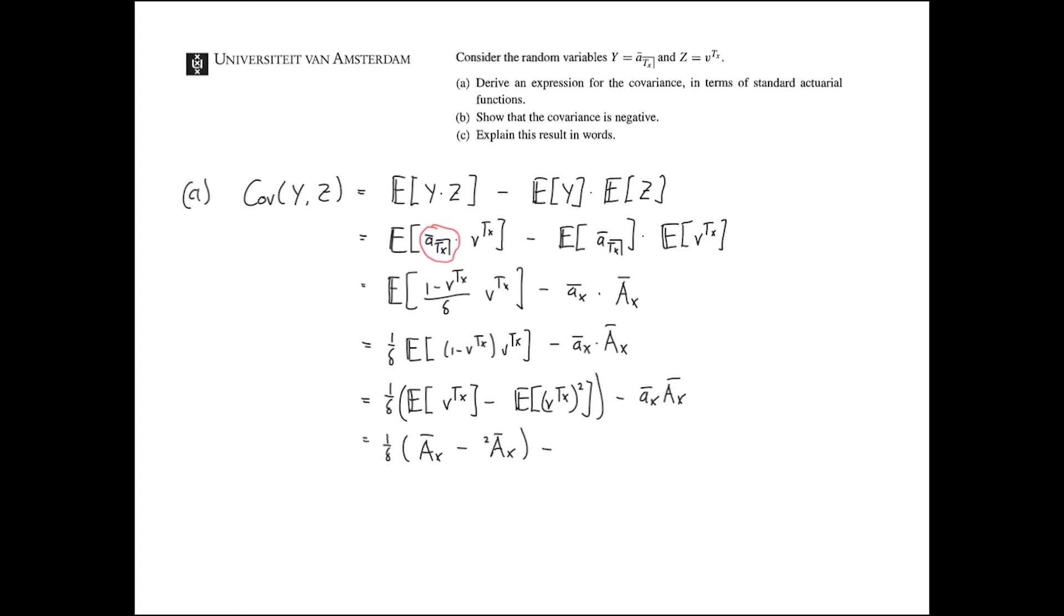Now, one last step for this small, this A bar x. We know that this is equal to 1 minus A bar x, capital A bar x, over delta. Again, because this is, we assume continuous, we'll be able immediately on that, and it's continuously compounded. So that's why this delta occurs. And then we have 1 minus A x bar, over delta, times A x bar.